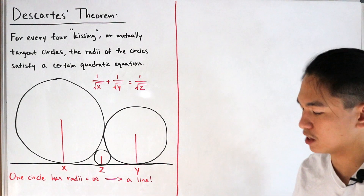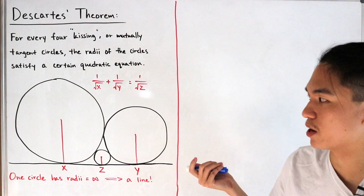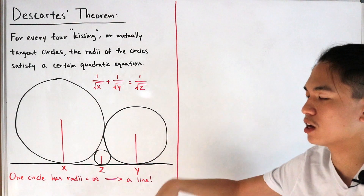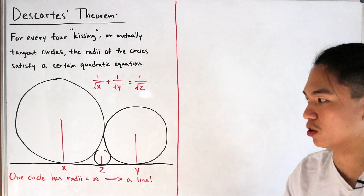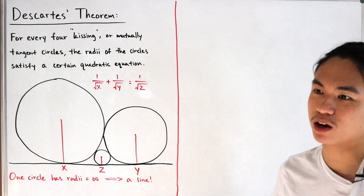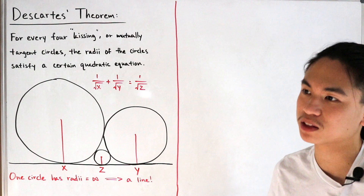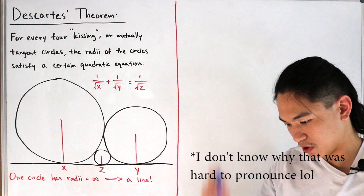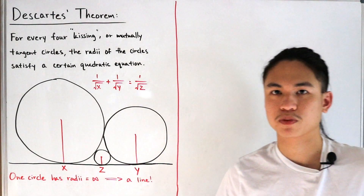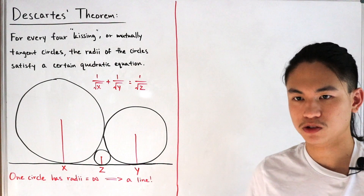This is what today's video is all about — proving the following equation with the given image of the three mutually tangent circles, including the line of radius equal to infinity. Since this is a geometry problem, the way we're going to prove this is we actually have to dive deep into constructing and adding our own line segments and performing calculation. You're going to see everybody's favorite theorem — the Pythagorean theorem. It's just a whole lot of manipulation from there, but it's actually pretty straightforward once it comes down to the final conclusion.